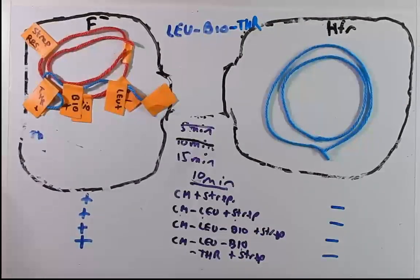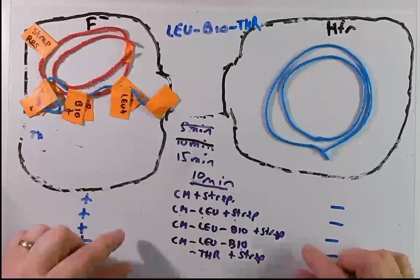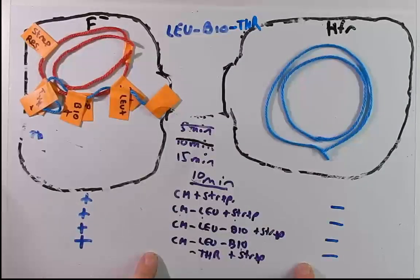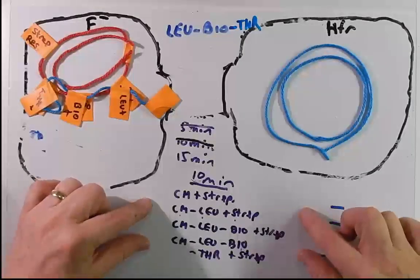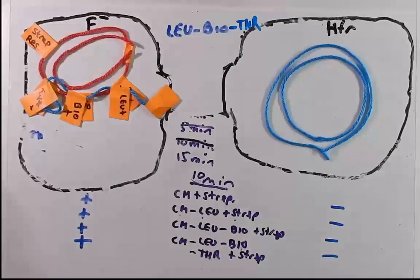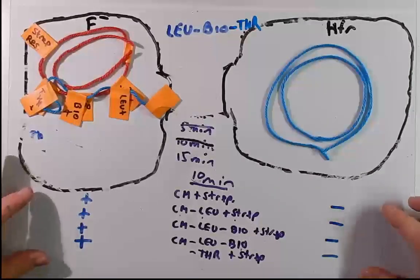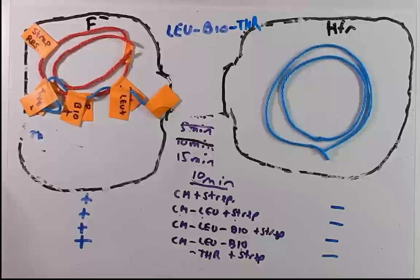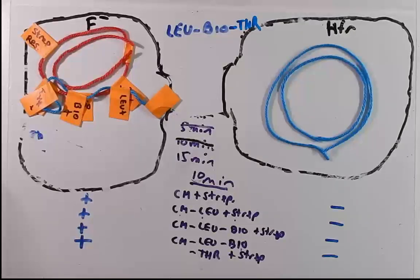In a real experiment, we wouldn't know the order of the genes, but you would map it out this exact same way — by allowing conjugation to occur at different time intervals and then plating on different media. In a real experiment, you would also have several other nutritional markers to follow, because you're trying to map the entire bacterial genome. But this is a nice way to introduce this concept by looking at these three genes. I hope this was helpful in explaining how genes are mapped in bacteria using conjugation. If you have any questions, please come see me. I'll see you in class.